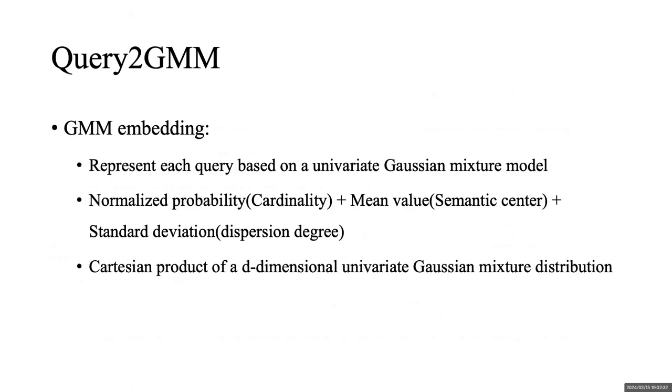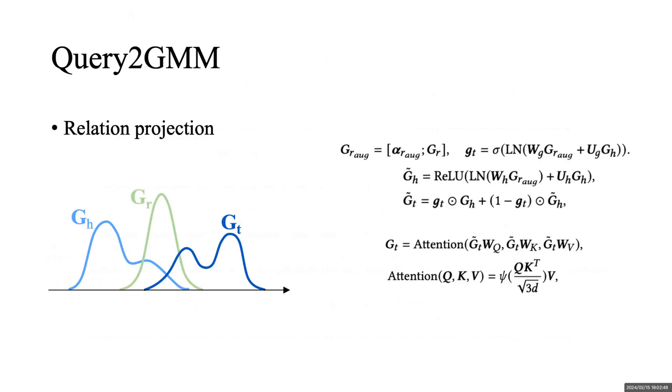In Query to GMM, we present GMM embedding to represent each query based on a univariate Gaussian mixture model. Each subset of a query is encoded by its cardinality, semantic center, and dispersion degree.